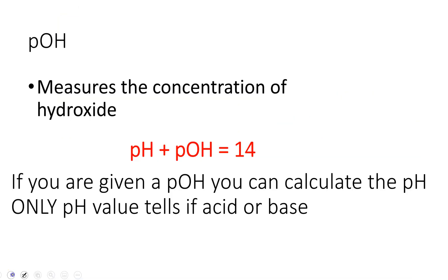So pOH is going to measure the concentration of hydroxide ions, so that's OH-. You might be given a hydroxide ion concentration, and if that's the case we can kind of work backwards. We have this relationship here: pH + pOH = 14. If you are given a pOH, you can calculate the pH. Only the pH value is going to tell you if we have an acid or a base.